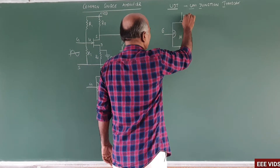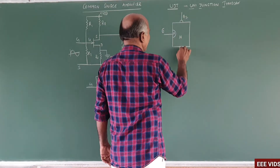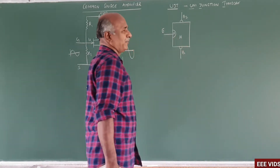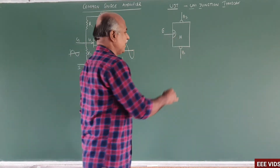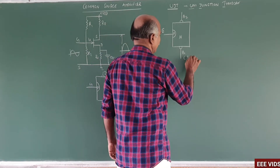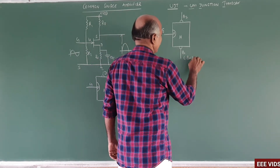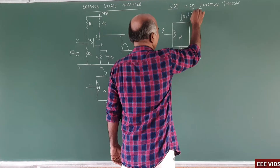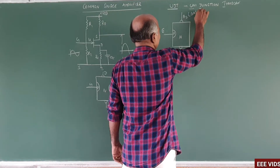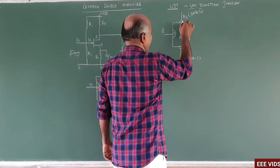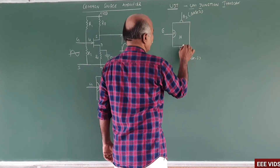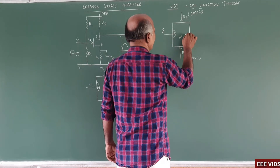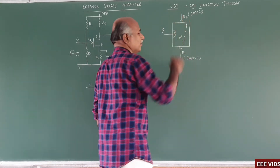Here is terminal B-2 and terminal B-1 — base-1 and base-2. B stands for base. So there are two terminals: base-1 and base-2. Here is a current path — the supply is applied and charges move from base-1 to base-2.